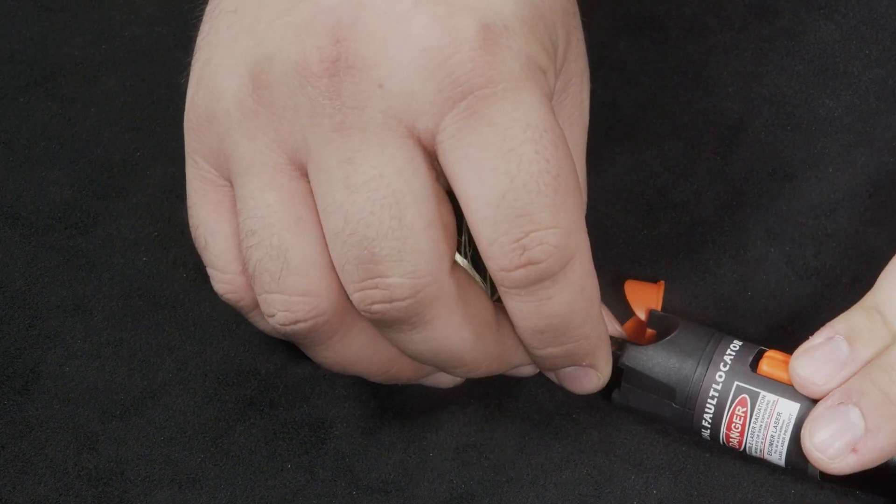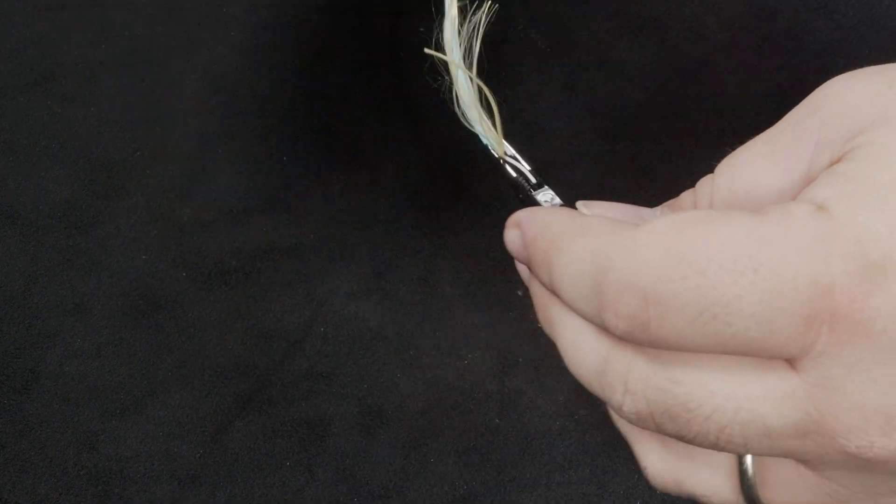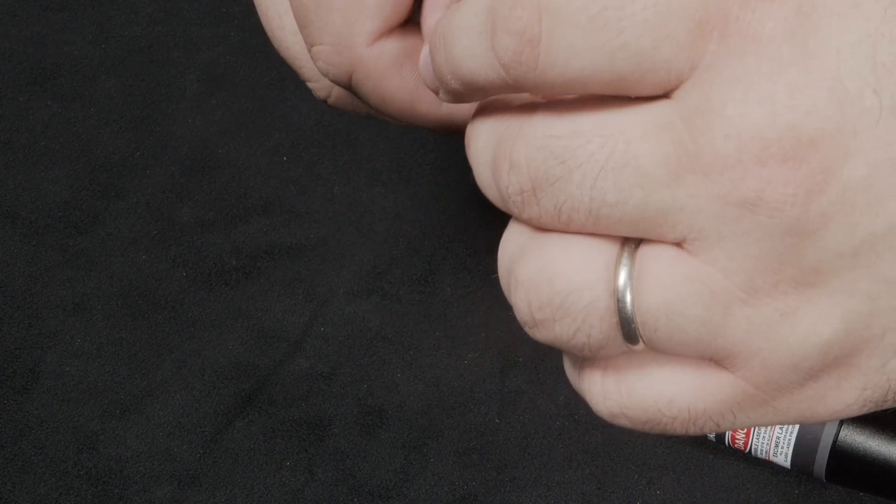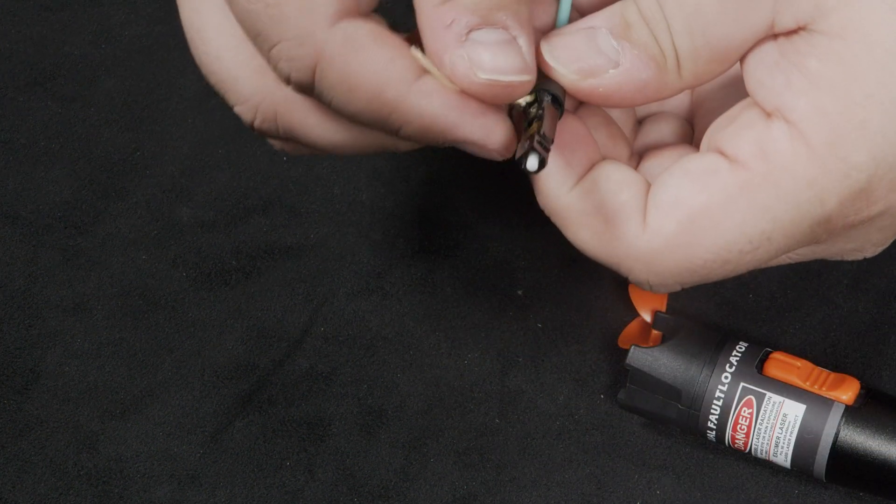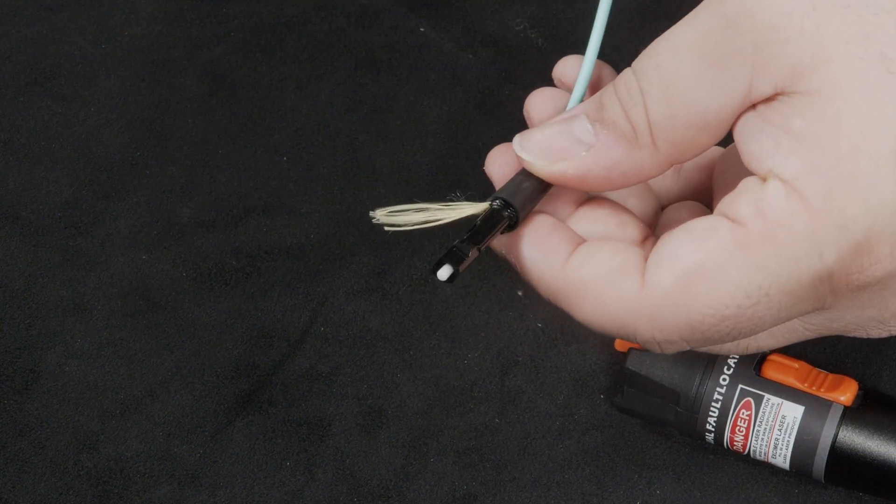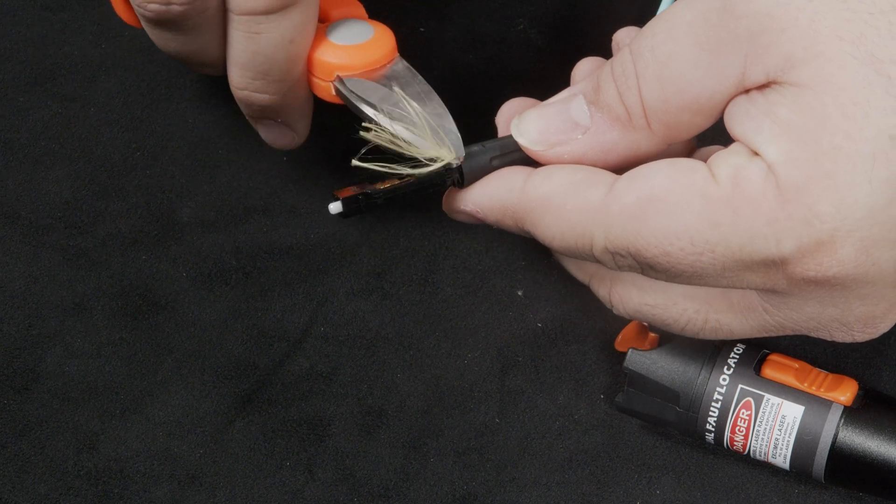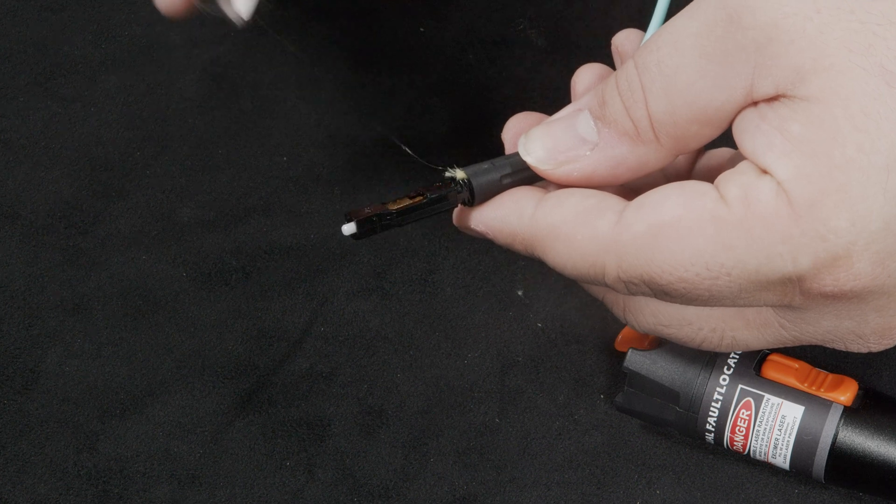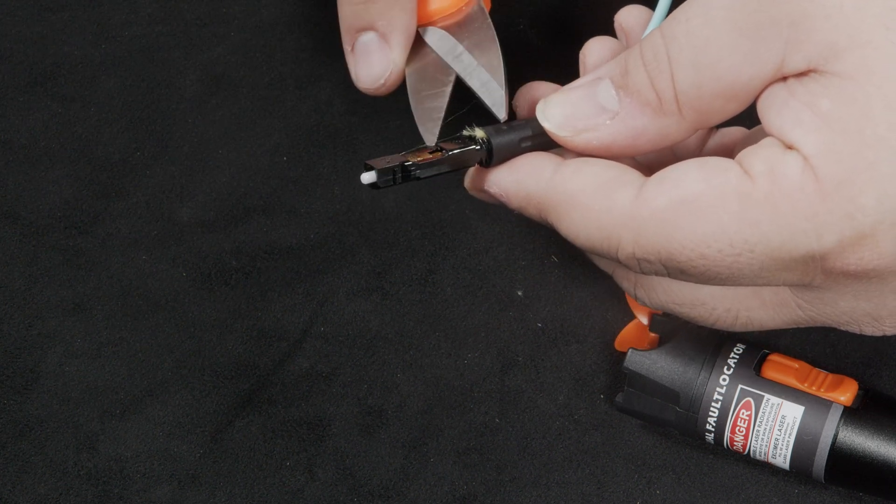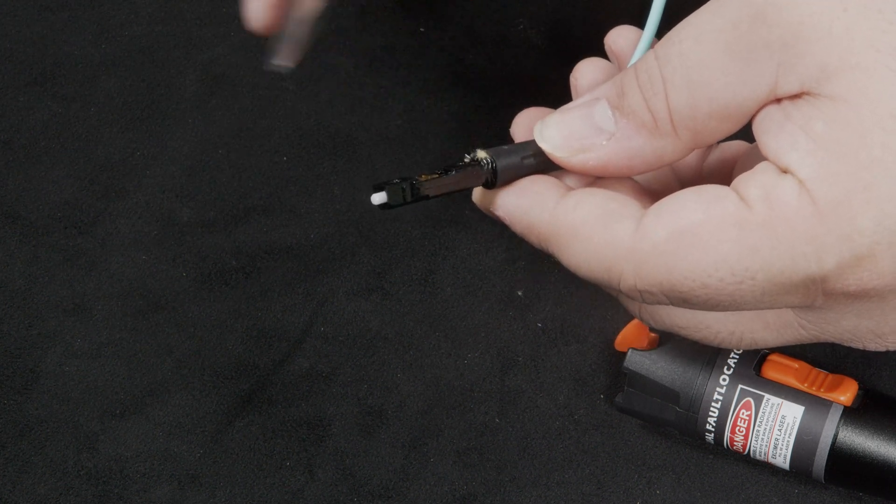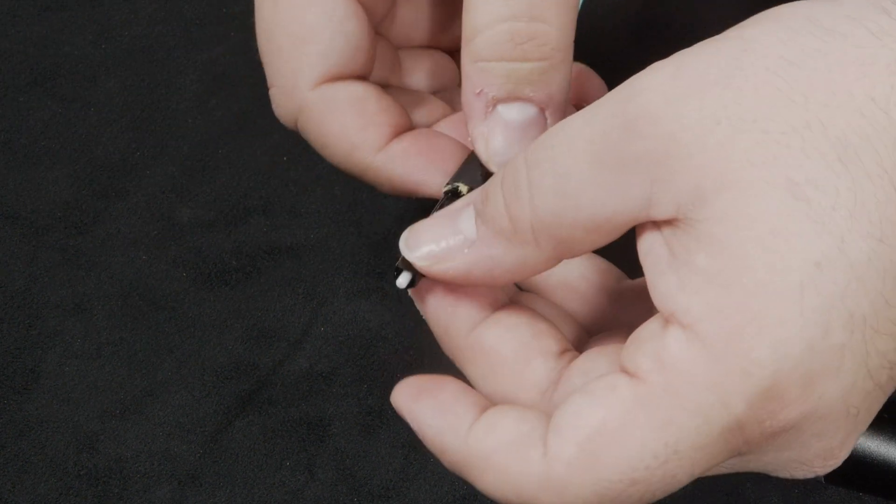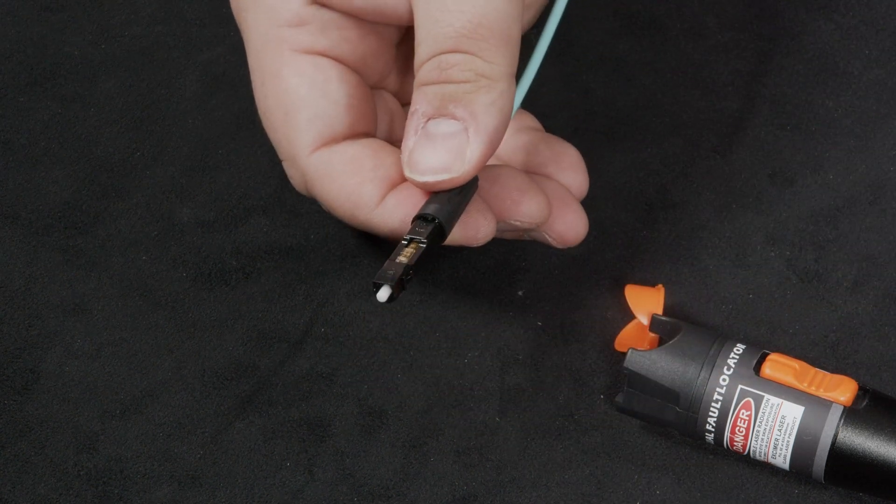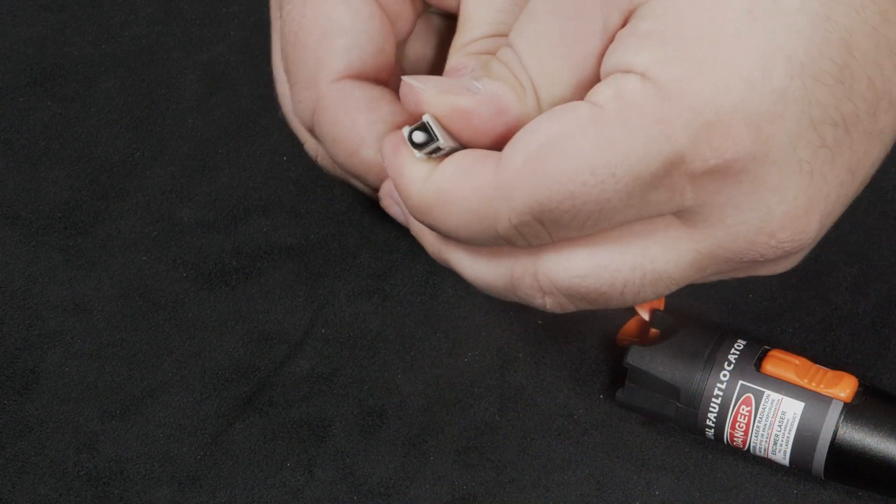Remove the connector from the VFL. Then, screw on the boot partially. And, using the Kevlar scissors, cut the excess Kevlar. And, finally, screw the boot on entirely. Replace the outer housing fully until it clicks.